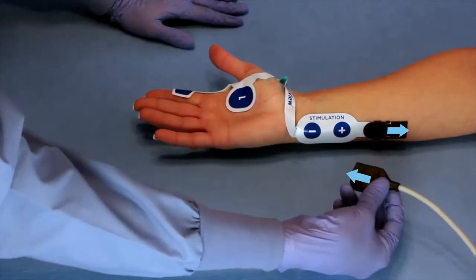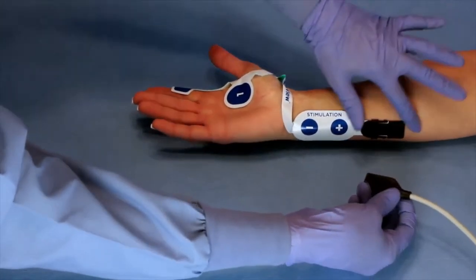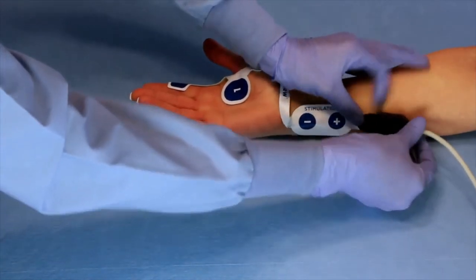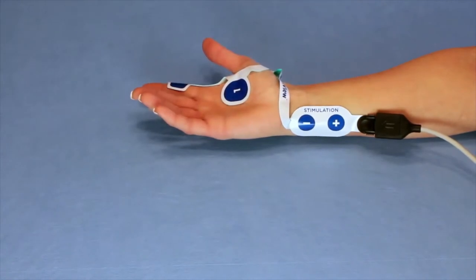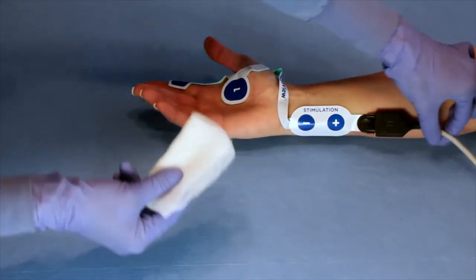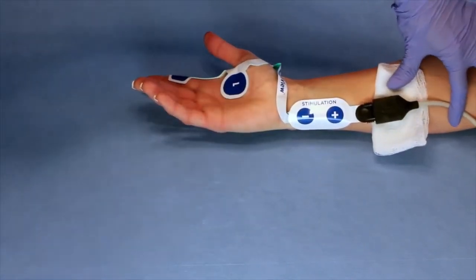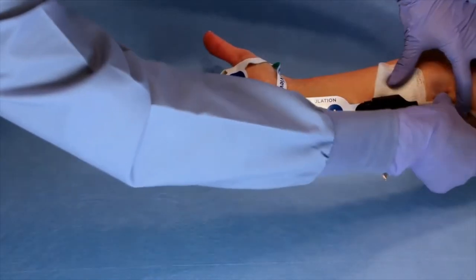Connect the electrode to the cable making sure that the arrows are pointing up and towards each other. If desired, a gauze can be placed under the cable to minimize skin compression. Tape the cable in place to prevent it from pulling on the electrode.